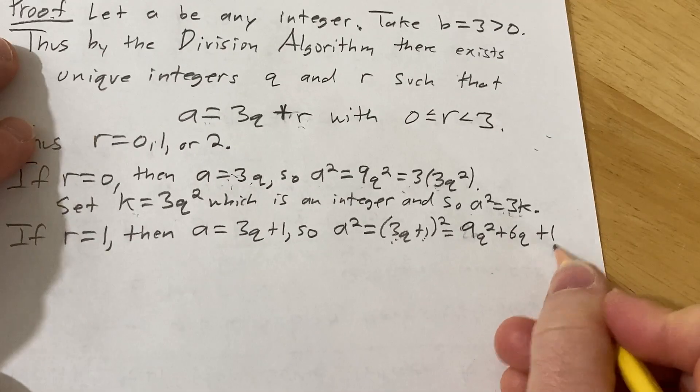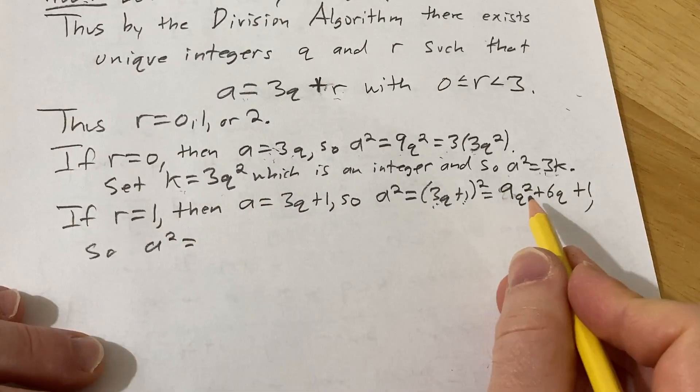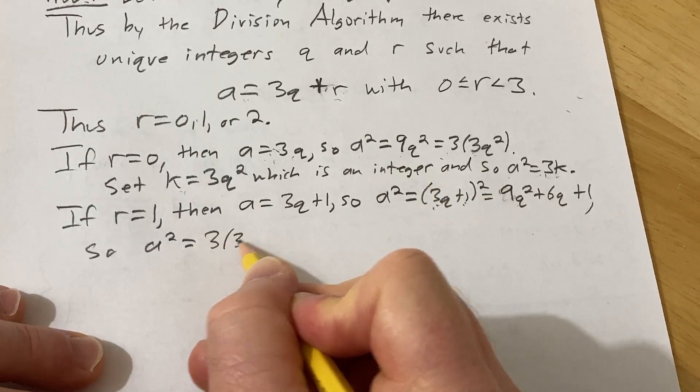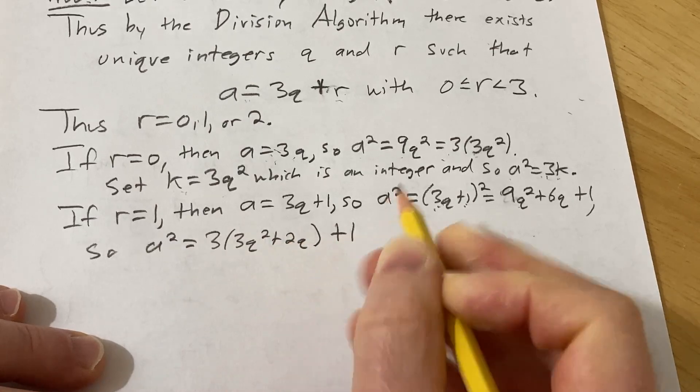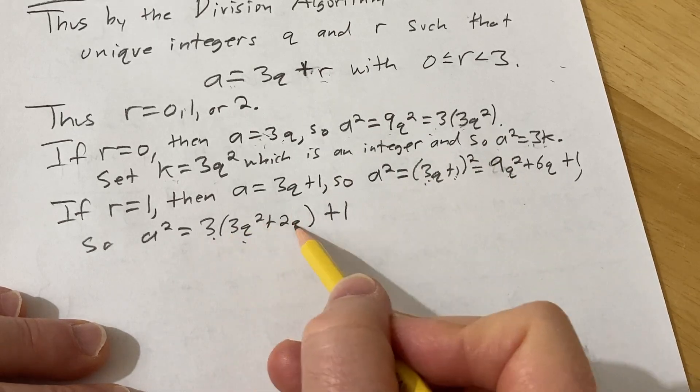So this means that a squared is equal to, you can pull out a 3 from these two terms here, so 3 times 3q squared plus 2q plus 1. 3 times 3q squared is 9q squared, 3 times 2q is 6q.